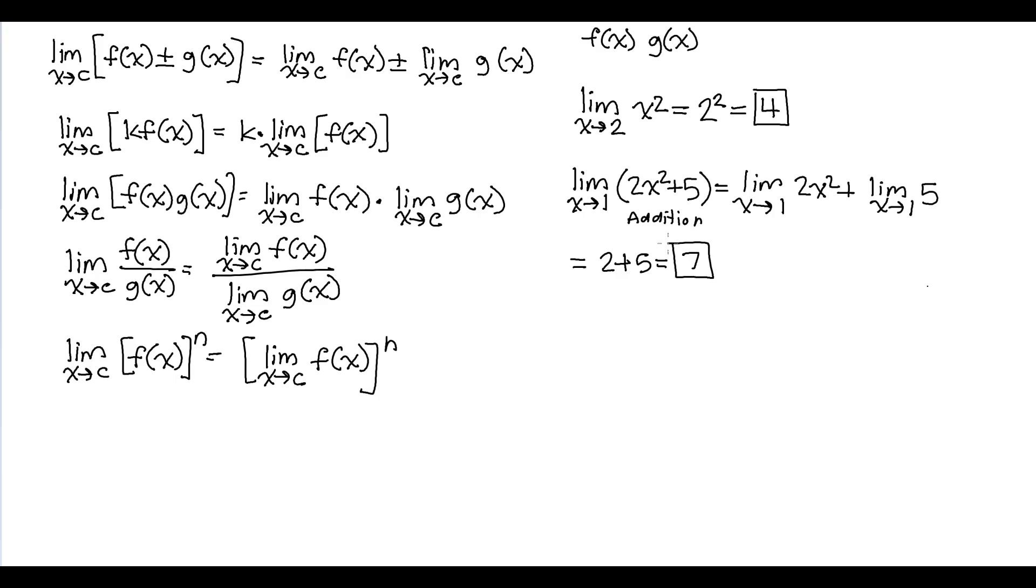Here is another one: limit as x approaches 1 of x squared plus x plus 2 over x plus 1. There are two choices—you can either do the quotient rule or just substitute in right here. Let's just substitute in. You might worry the denominator goes to 0, but 1 plus 1 is 2, so the denominator does not go to 0, which means you just substitute directly. So 1 squared plus 1 plus 2 over 1 plus 1 equals 4 divided by 2 is 2.